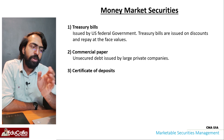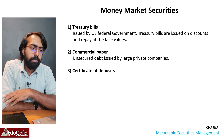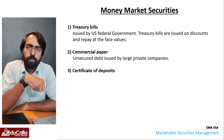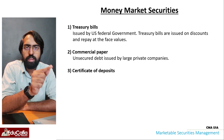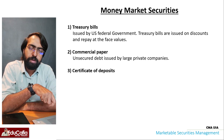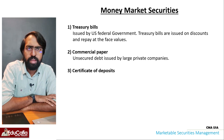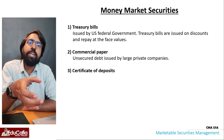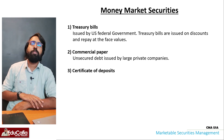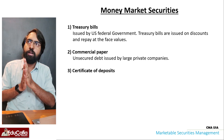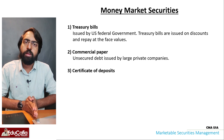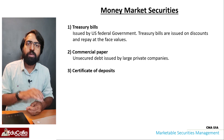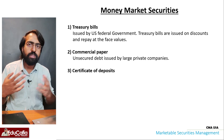Commercial Paper is an unsecured debt instrument issued by large private companies. Private companies issue a commercial paper promising to pay cash on a specific date. The investor provides cash now and receives principal plus interest on the maturity date. It is a short-term financing instrument.